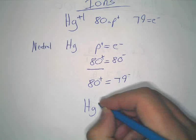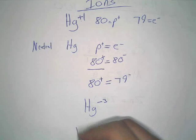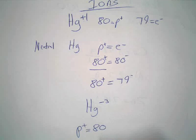Let's say we've got Mercury with a negative 3 charge. We establish that Mercury has 80 protons.